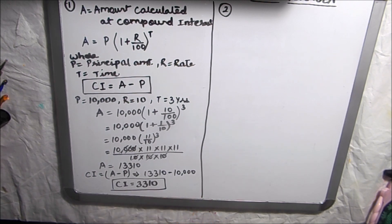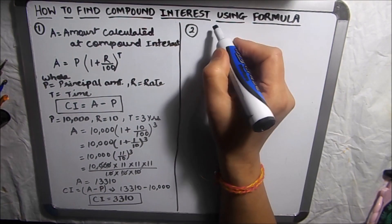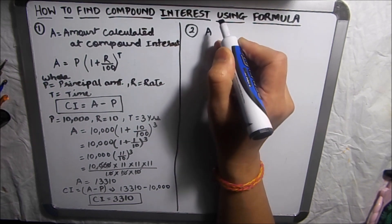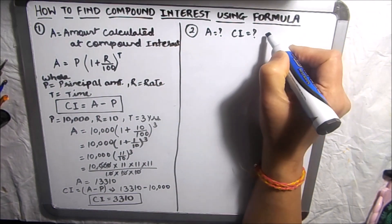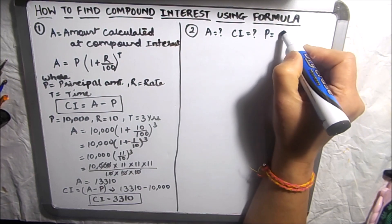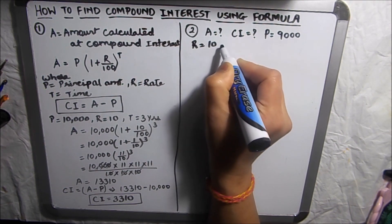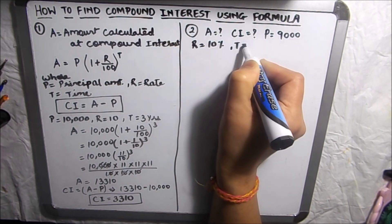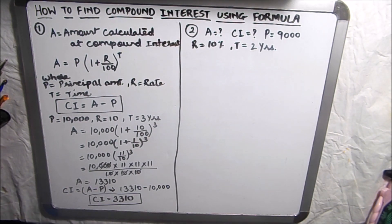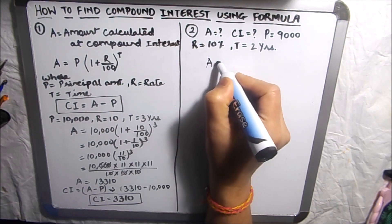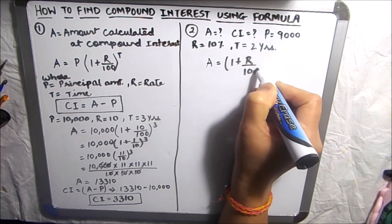Let's take another example. We have to find the compound interest where the principal amount is 9,000, the rate of interest is 10 percent, and the time is two years. First, we will find the amount using the formula P × (1 + R/100)^T.